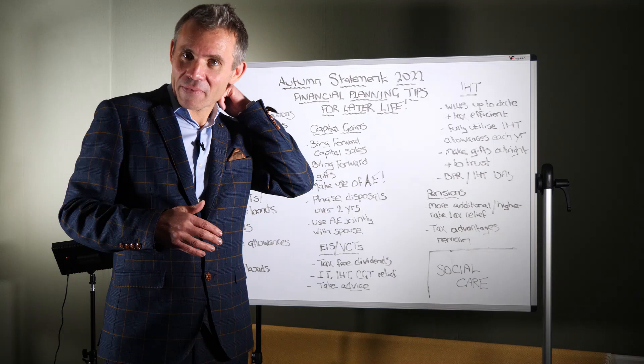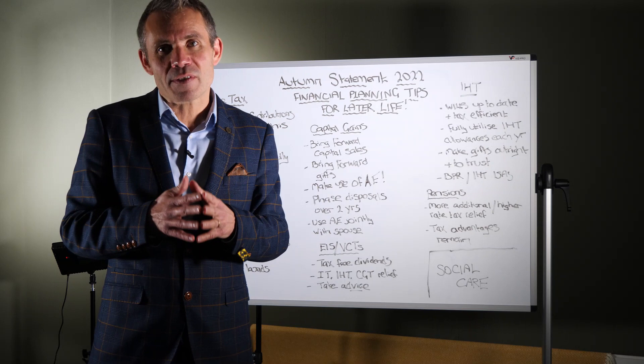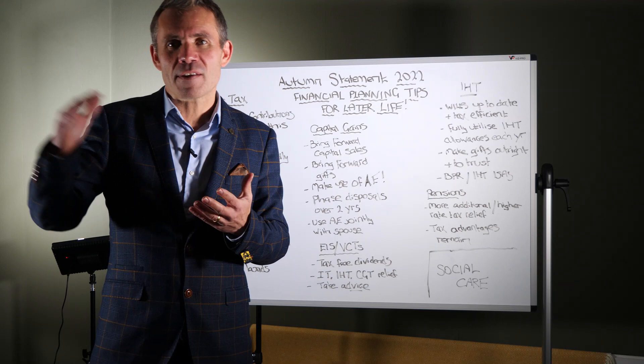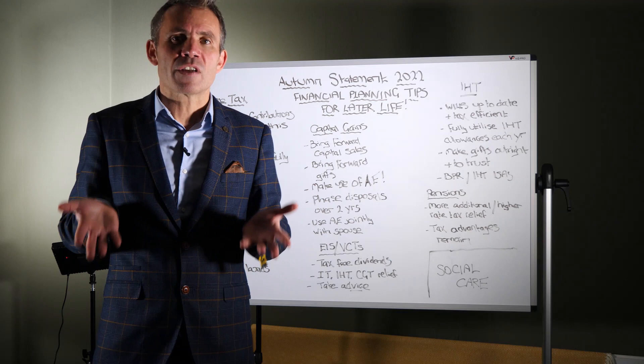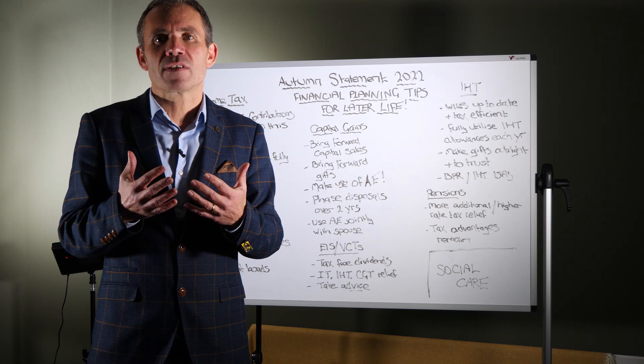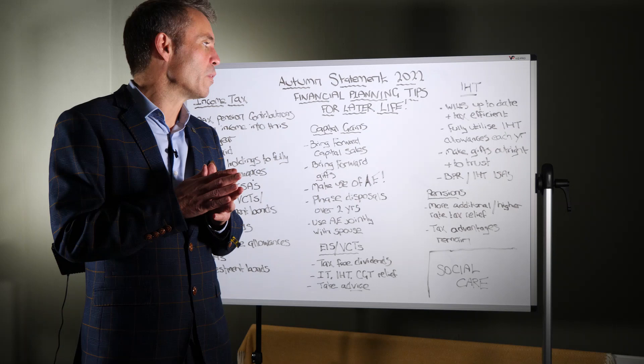Inheritance tax. So they have fixed the thresholds yet again. The £325,000 that everybody gets of assets that are not taxed through inheritance tax, that's been fixed for another six years till 2028. That nil rate band has actually been fixed since 2009. And because asset prices are rising over time, it means that more and more people, estates, are going to be subject to inheritance tax. So I fully expect inheritance tax to continue to increase over the next few years.